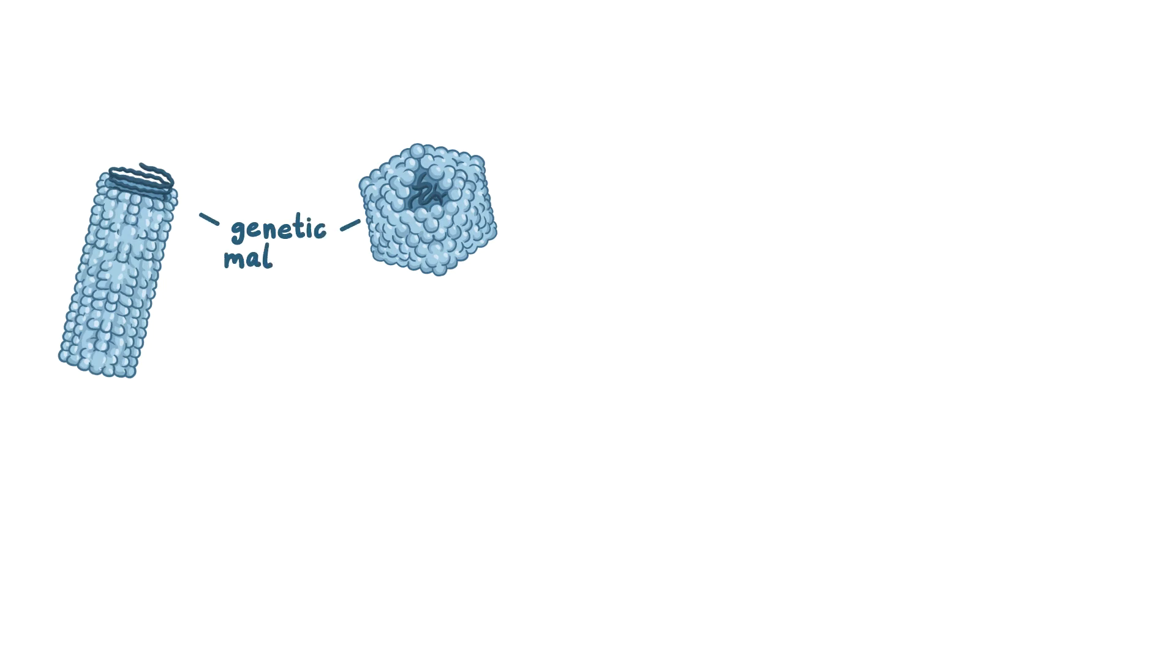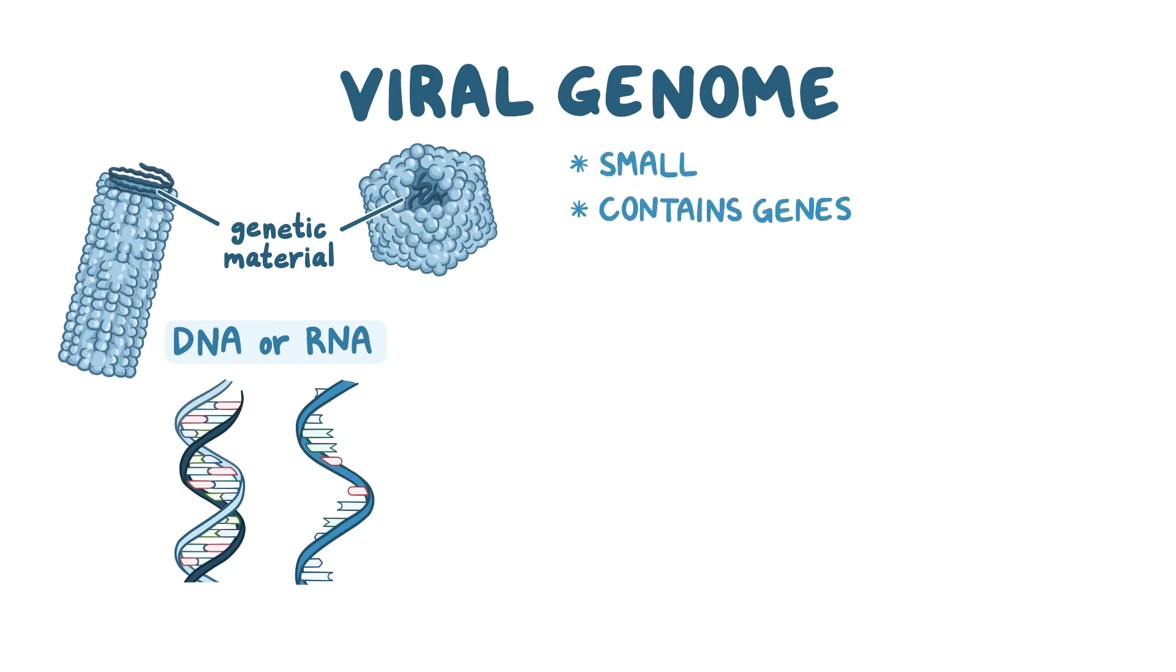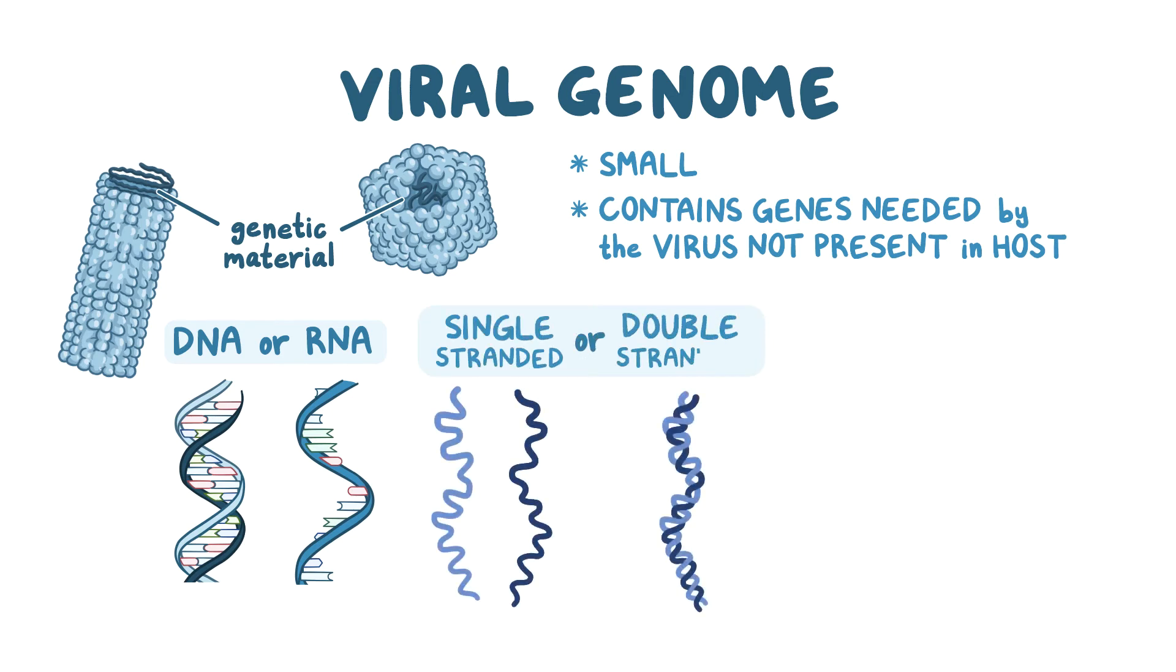Now the nucleic acid core of the virus contains the genetic material which can either be DNA or RNA, and the total genetic content of the virus is called the viral genome. The viral genomes are usually small and contain only a few genes that encode for proteins needed by the virus that's not present in the host cell. The genetic material can be single-stranded, or double-stranded, linear, or circular.